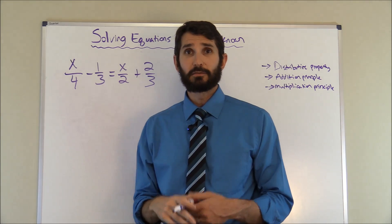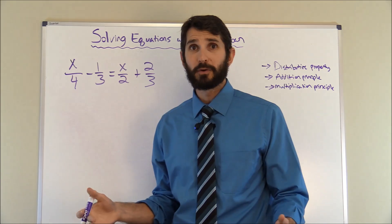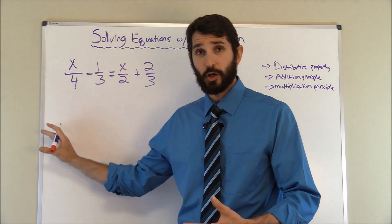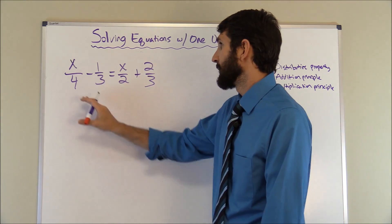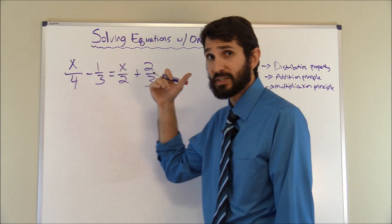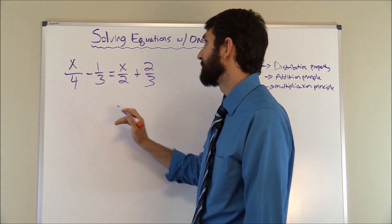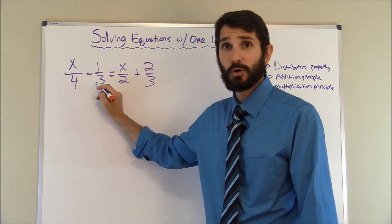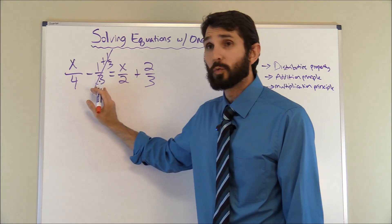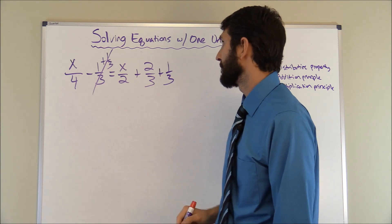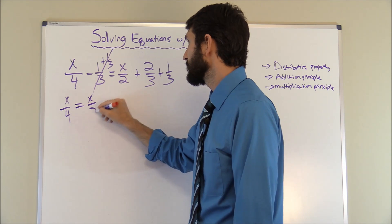Now I'm going to do a slightly more complicated fraction equation using the exact same principles. We have X over four minus one third equals X over two plus two thirds. There are no parentheses, so no distributive property needed. We want to get the variables on one side and the numbers on the other. Let's start with the number part — we want to get the one third to the other side. Using the addition principle, we add one third to both sides, which cancels the minus one third on the left.